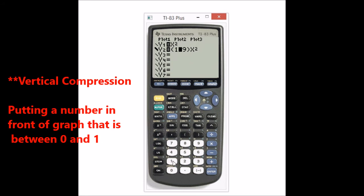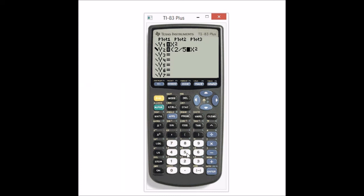And this could be any fraction between 0 and 1. So I could put like 2 over 5. And let's take a look at the graph. It's still going to get wider. This is a vertical compression.